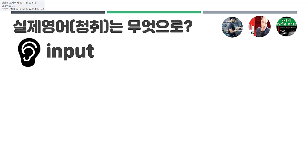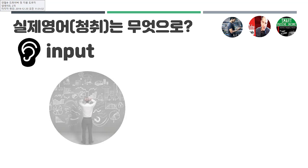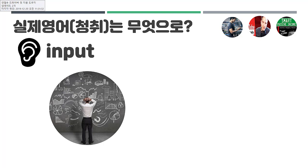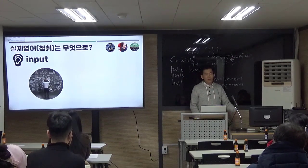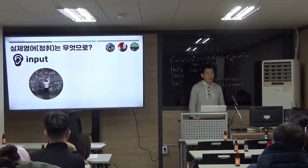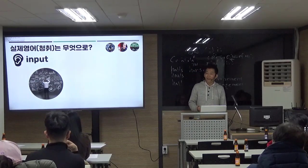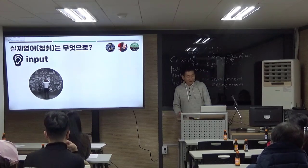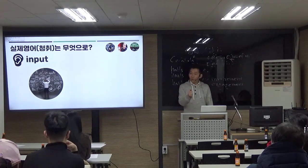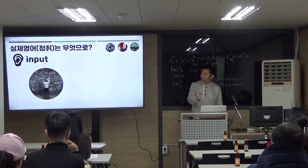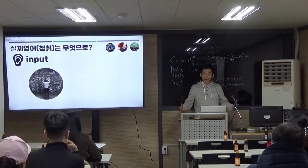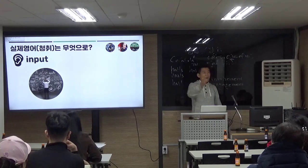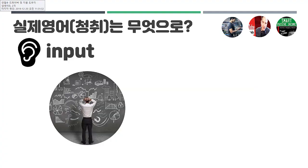실제 영어 청취는 그러면 무엇으로 하겠느냐? 우리는 정보가 너무너무 많은 세상에 살고 있어요. 1990년대 초반만 하더라도 TV 채널이 3개, 4개밖에 없었어요. 지금은 TV 채널에 고정을 잘 못하고, 개인 방송도 많잖아요. 유튜브도 무지막지하게 많이 보잖아요. 이것을 다 습득하는 건 불가능해요. 그래서 여러분들이 필터링을 하셔야 돼요.